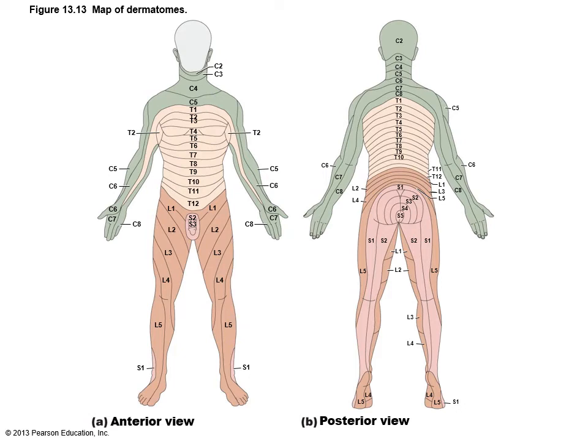Dermatomes represent an area of skin innervated by a branch of a single spinal nerve. All spinal nerves except C1 participate in dermatomes. So if you have pain in a certain area of the skin, you can determine which particular spinal nerve it's originating from.